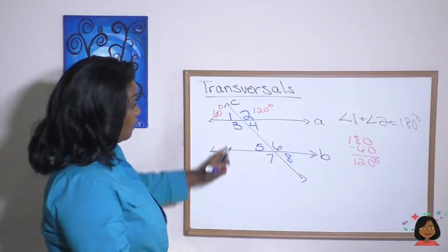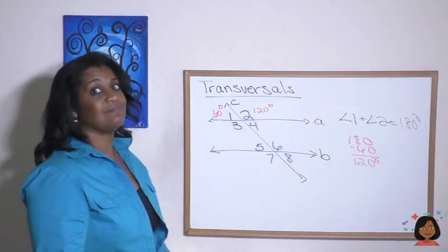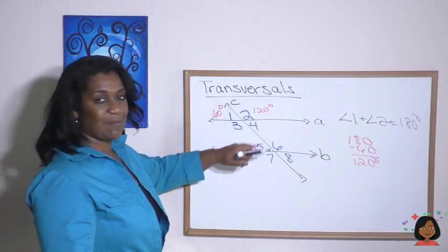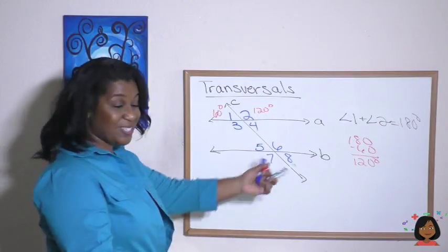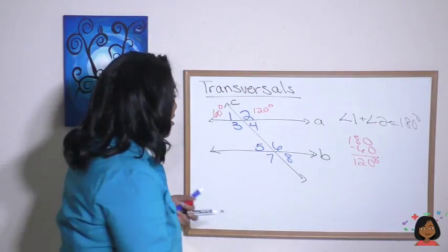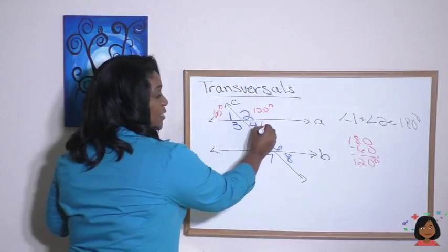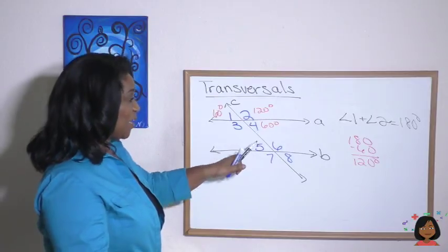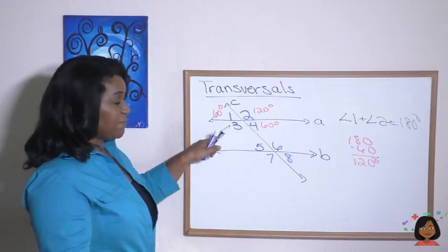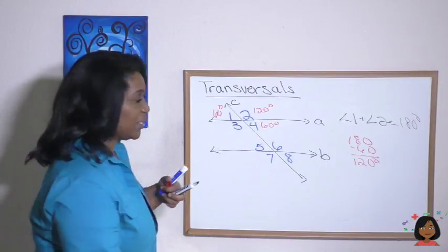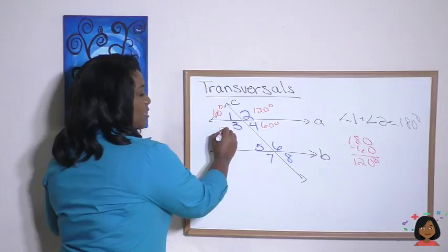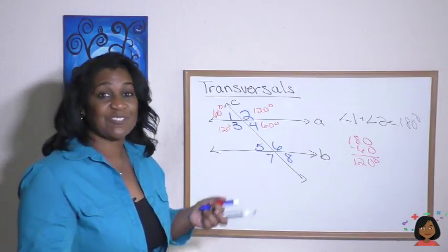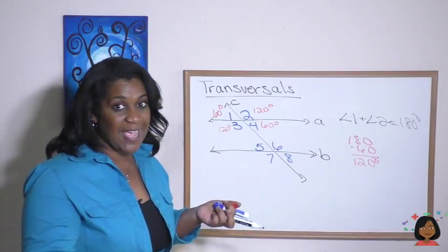And if I know that angles 2 and 4 are supplementary, they add up to 180 degrees. We just did that math, so angle 4 is 60 degrees. And since 3 and 4 are supplementary, angle 3 is 120 degrees. That's how supplementary angles can be useful.